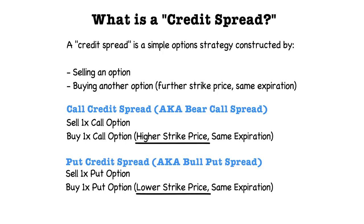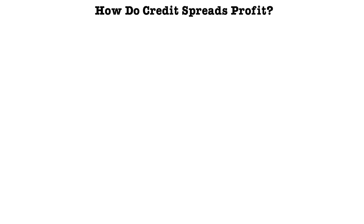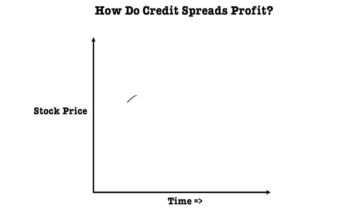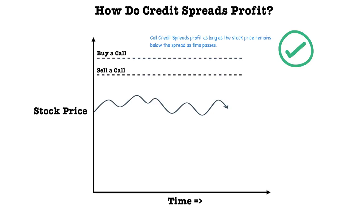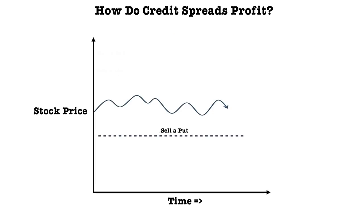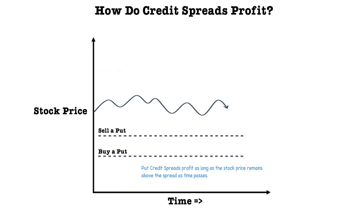If you're trading a credit spread and putting on a bearish position — meaning you want the stock price to go down — then you're going to be trading a call credit spread. If you're trading credit spreads in a bullish manner, meaning you want the stock price to increase, then you'll be trading put credit spreads. A call credit spread is bearish and profits as long as the stock price remains below the spread as time passes. A put credit spread consists of selling a put option and buying another put option at a lower strike price, and it profits when the stock price remains above the put spread as time passes.